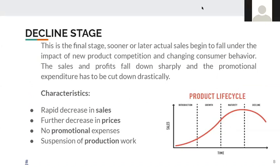The final stage is the decline stage. Sales begin to fall and the product is gradually replaced by new innovations. There may be three reasons: technical advancement, change in consumer preference, or increased competition. The characteristics of this stage include rapid decrease in sales, decrease in prices, no promotional expenses, and the suspension of production work.